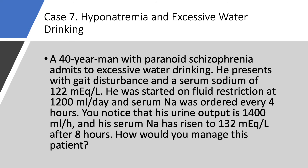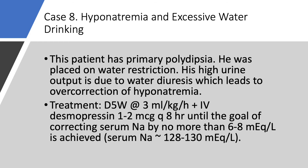Case number 7, hyponatremia and excessive water drinking. A 40-year-old man with paranoid schizophrenia admits to excessive water drinking. He presents with gait disturbance and a serum sodium of 122 in the emergency room. He was started on fluid restriction at 1,200 ml per day, and serum sodium was checked every four hours. His urine output suddenly rose to 1,400 ml and serum sodium rose over eight hours to 132. This is someone with primary polydipsia now on fluid restriction who is starting to have polyuria.